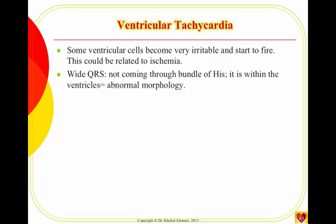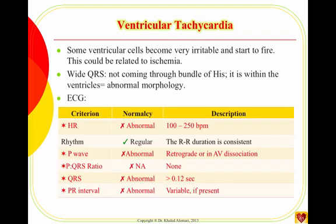VTAC can be related to ischemia. Since it originates in the ventricles — not the SA node or AV node — the QRS will be abnormally wide. The heart rate is always high because there is a lot of excitement from the ventricles. The major distinguishing feature of VTAC from other ventricular dysrhythmias is that it is regular.